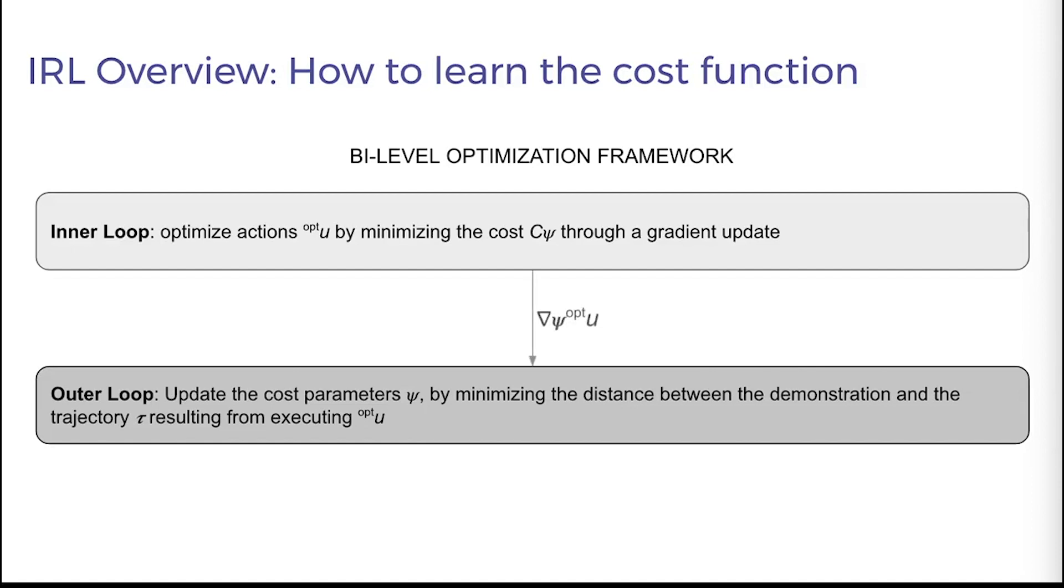In comparison to other IRL algorithms, our outer loop updates cost function parameters by differentiating through the inner loop. This gradient-based connection between the inner and outer loop leads to a more stable and effective optimization.